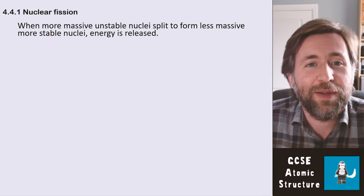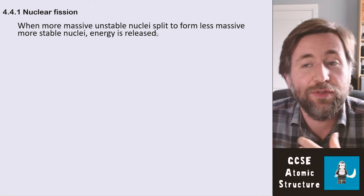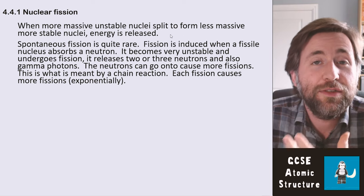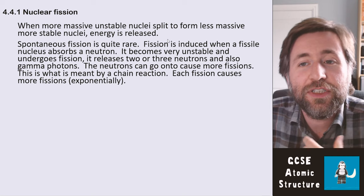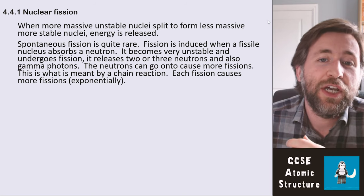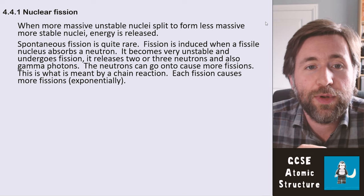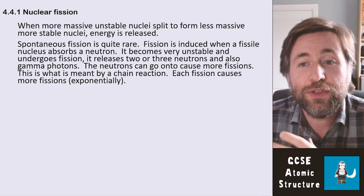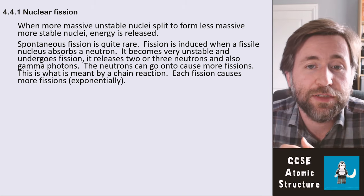You need to know quite a lot of detail about nuclear fission. Nuclear fission is when a more massive and unstable nucleus splits to form a less massive and more stable nucleus, and in doing so energy is released. Spontaneous fission is quite rare. Fission is induced when a fissile nucleus absorbs a neutron — it becomes very unstable and undergoes fission. It releases two or three neutrons and also a lot of gamma radiation.